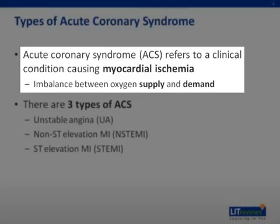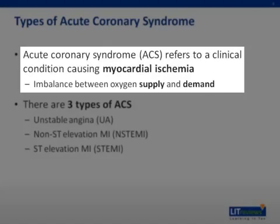A less common cause of decreased oxygen supply is dynamic obstruction, which may be triggered by intense focal spasm of a segment of a coronary artery. This is called variant angina or Prinzmetal's angina. ACS may also be precipitated by conditions that increase myocardial oxygen demand, such as fever, tachycardia, or thyrotoxicosis.